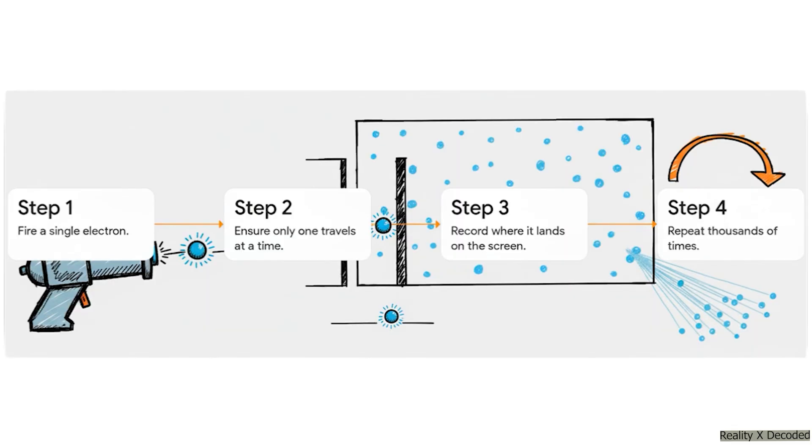So they set up the experiment all over again. But this time they used a special device that could fire electrons one at a time. And this part is absolutely crucial. There's no chance of electrons bumping into each other or something weird like that. We fire one, we watch where it lands, and only then do we fire the next one.